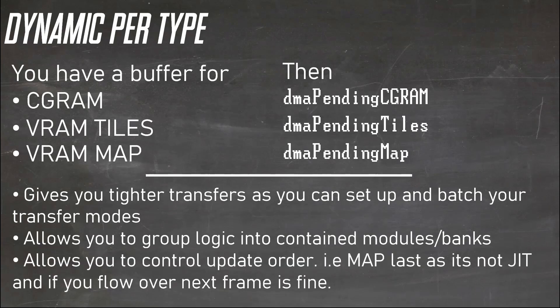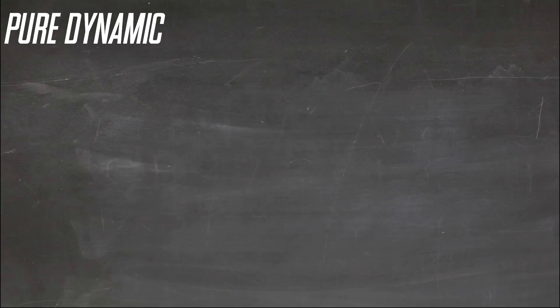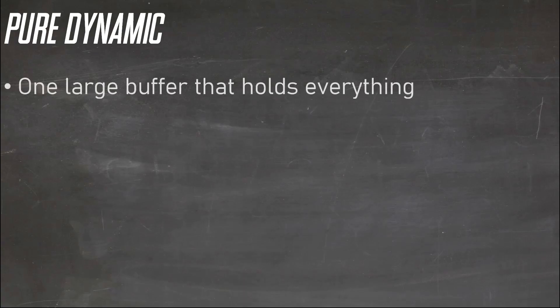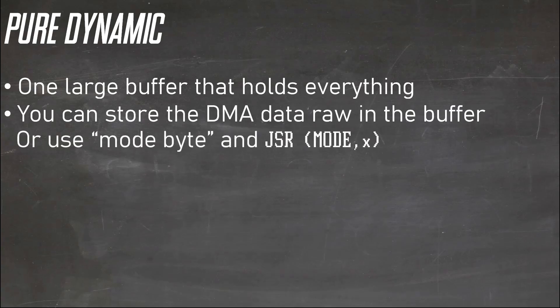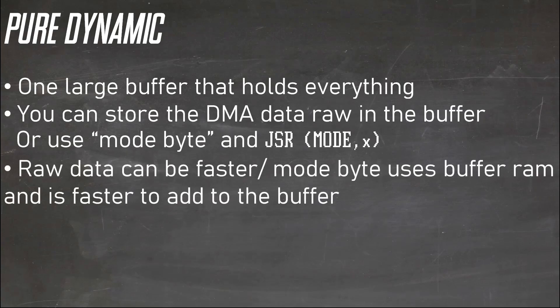It also gives you coarse controls over the DMA order and overflow protection. Pure Dynamic: now you have a single stack buffer that holds all DMA data. You either just store the DMA packet data raw — which can save you some time as you just copy and fire, etc. — or store a mode byte, which you switch on and run custom hardcoded setup for each type for your engine's needs.